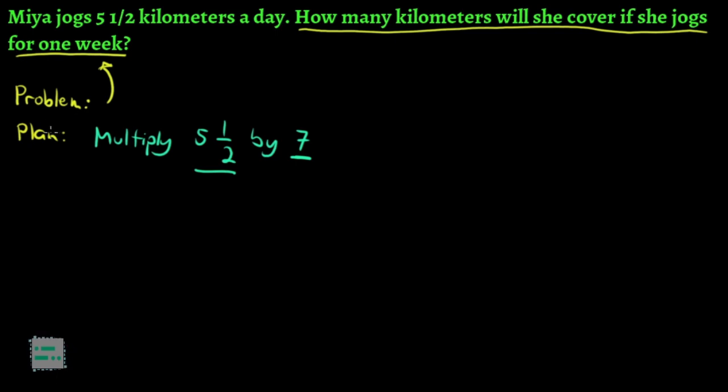Meron na tayong plano. Ano naman yung process na kailangan natin pagdaanan. It's the same as carrying out our plan. So, ang plano natin is, i-multiply si 5 and one half by 7. Let's just go ahead and do that.